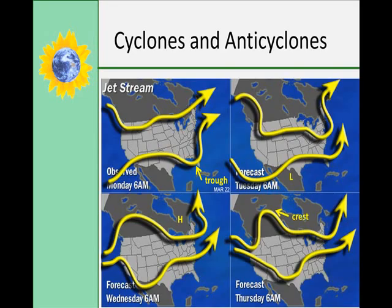Cyclones are areas of low air pressure, and anticyclones are areas of high pressure. Remember with the Coriolis effect, high pressure air moves in a clockwise manner and low pressure air moves in a counterclockwise manner. Each has characteristic airflow patterns and distinctive weather conditions. Both cyclones and anticyclones originate within the troughs and crests of the jet stream.